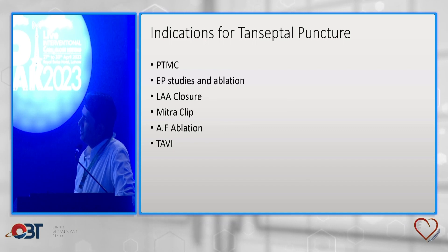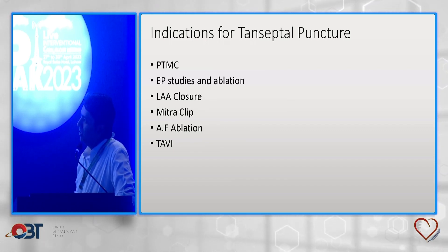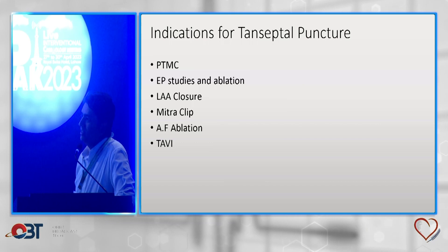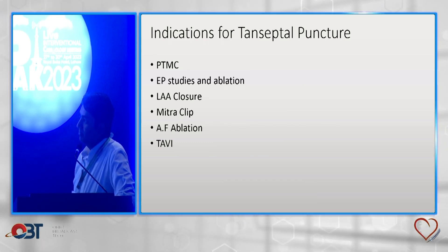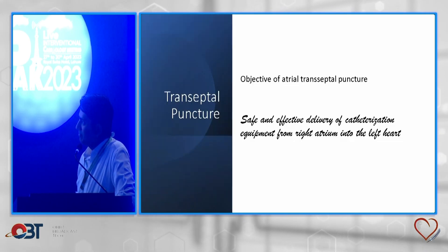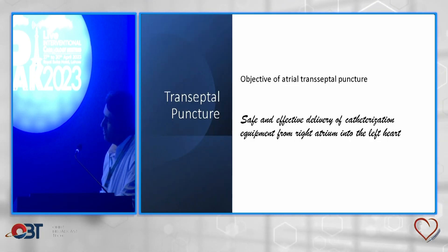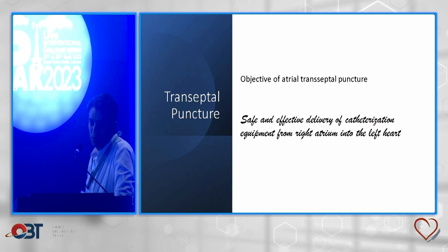With the passage of time, the indications of transseptal puncture have also evolved. Now PTMC, EP studies, LA appendage closure, MitraClip, AF ablation, and TAVI as well. The objective of transseptal puncture is the safe and effective delivery of catheterization equipment from the RA into the left heart.